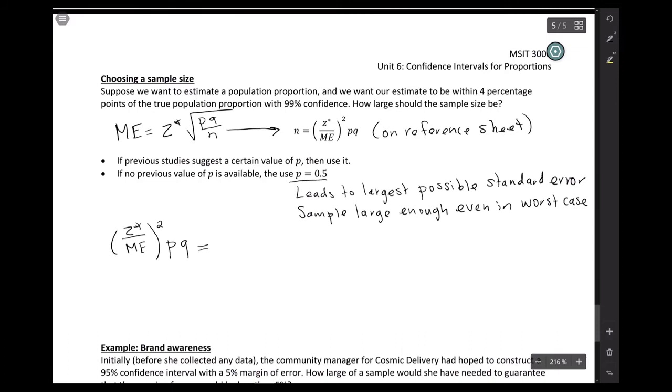So how do we decide what our Z star should be? So remember, the way you decide what your Z star is, is by looking at your confidence level. And we've seen on the previous page, page three, how to figure out the Z star for 99% confidence. It comes out to be 2.5758. So that's our Z star.